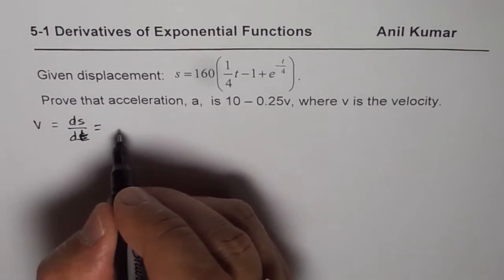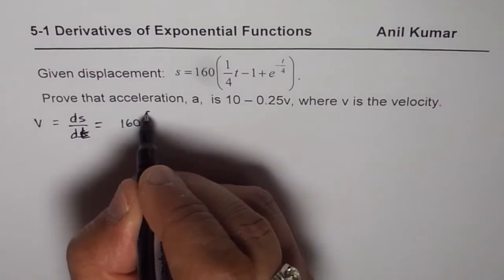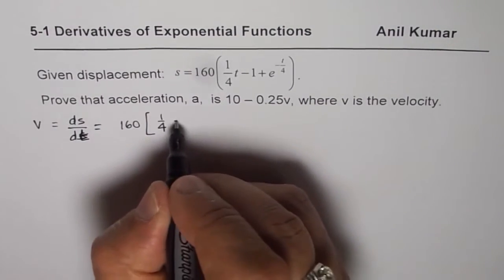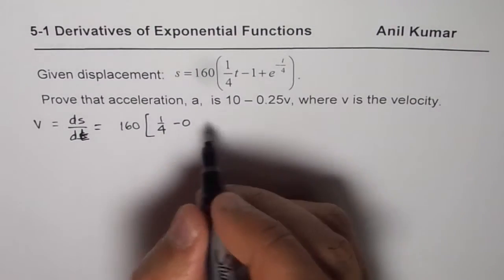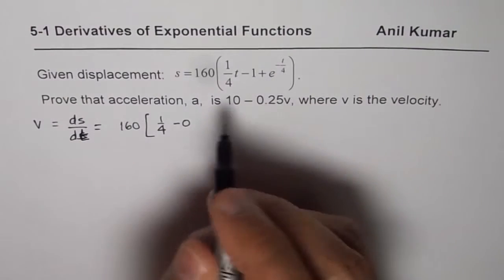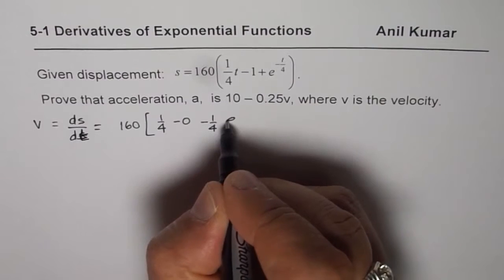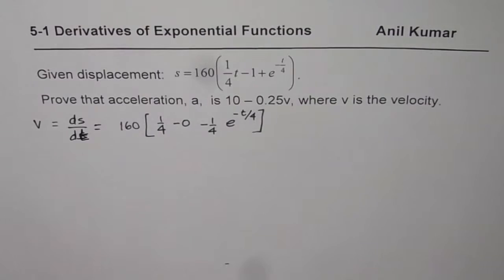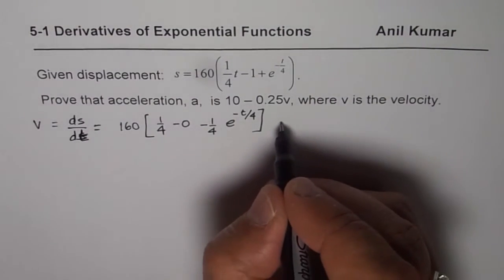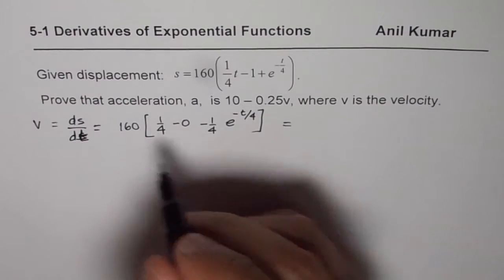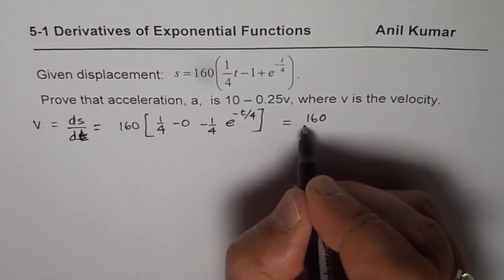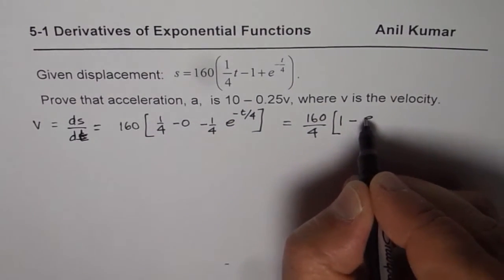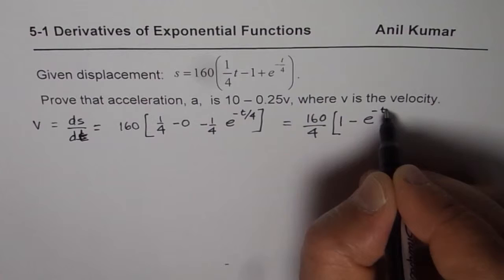The derivative of this function equals 160 times: the derivative of 1 over 4t is 1 over 4, minus 1 is 0, and for e to the power of minus t over 4 the derivative is minus 1 over 4 times e to the power of minus t over 4. We can simplify by taking 1 over 4 common, giving 160 over 4 times (1 minus e to the power of minus t over 4).